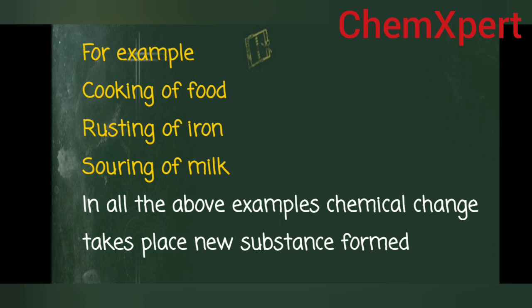The brown flaky substance formed is known as rust. Another example is souring of milk — in summer, when we forget milk out of the fridge for about 4-5 hours, it sours. That process is also a chemical change. All these processes involve chemical change, and any process which involves chemical change is called a chemical reaction.